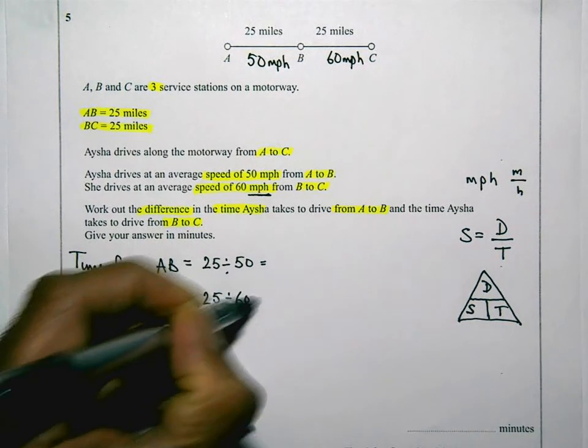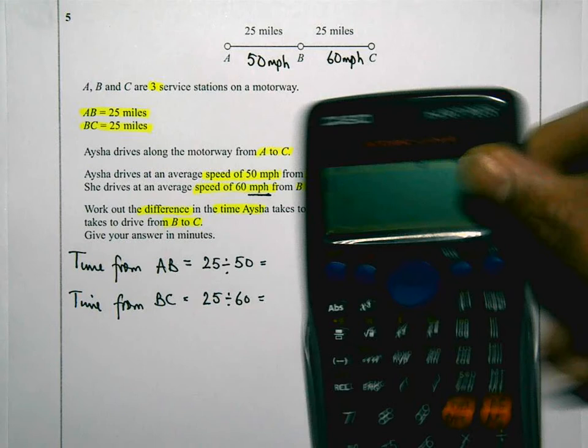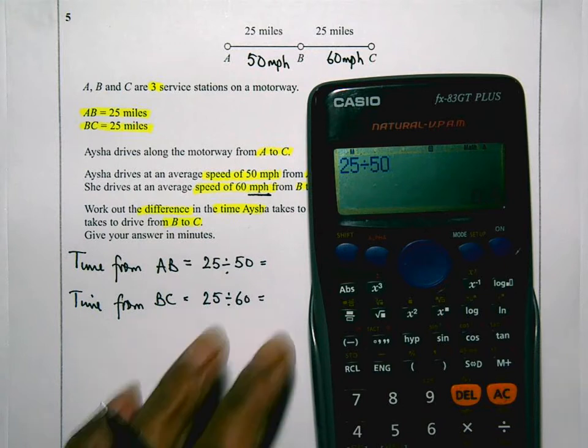I'm going to use my calculator to work this out. So let's have a look. 25 divided by 50. That's equal to 0.5.